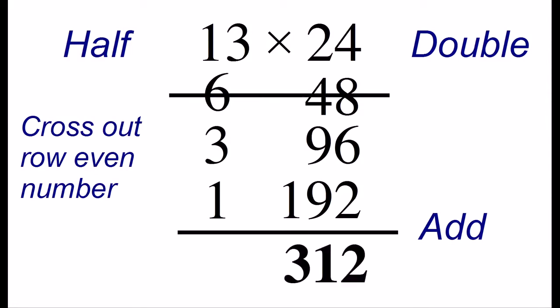And when we do that, we get the result of 312, and that's our answer. 13 times 24 is 312.